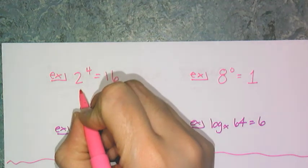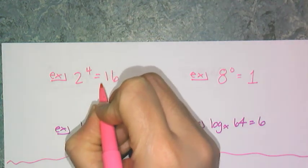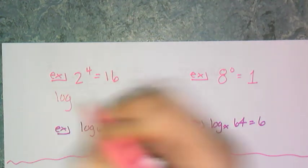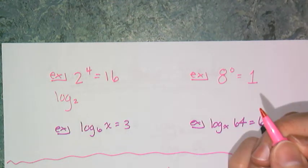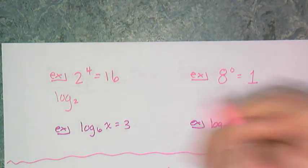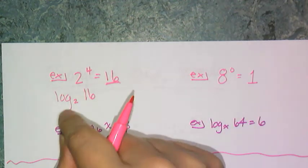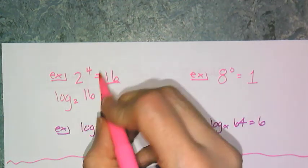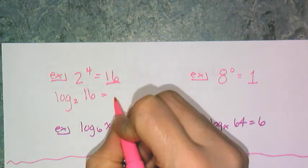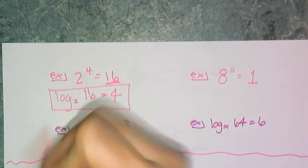So this is an exponent, so I want to write it as a logarithm. I write log, and whatever my base is, it's the little subscript, and then whatever the output was, that's what goes in there. So log base 2 of 16 has to spit out the exponent, which is 4.